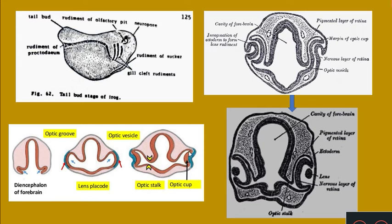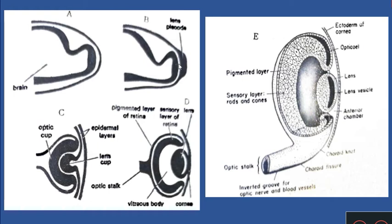Now the ventrolateral wall of the optic vesicles starts flattening and invaginating. So far this was like a vesicle, but now you can see them invaginating — the optic vesicles undergoing invagination by flattening of the ventrolateral wall. Now it is no more a vesicle; you can call it as an optic cup. When the vesicle becomes a cup, the cavity inside is reduced, so the invagination of the optic cup is obliterating or reducing the cavity inside, which is called as the optocoele.